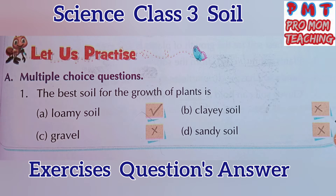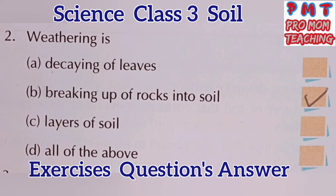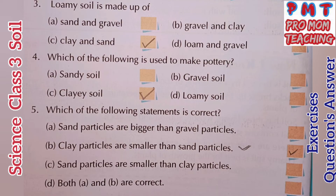Multiple choice questions. First: the best soil for the growth of plants is — tick A — loamy soil. Weathering is — tick B — breaking up of rocks into soil. Next: loamy soil is made up of — tick C — clayey and sand. Fourth: which of the following is used to make pottery? — tick C — clayey soil. Fifth: which of the following statements is correct? — tick B — clay particles are smaller than sand particles.